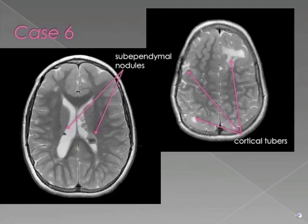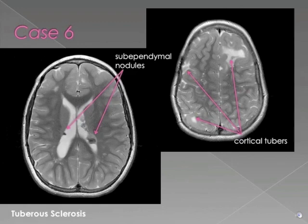In Case 6, we have two axial T2-weighted MR images. The first demonstrates bilateral subependymal nodules. The central T2 hypointensity within these nodules is consistent with calcifications. The second image demonstrates cortical and subcortical T2 hyperintensity in the bilateral cerebral hemispheres. This is a classic case of tuberous sclerosis.